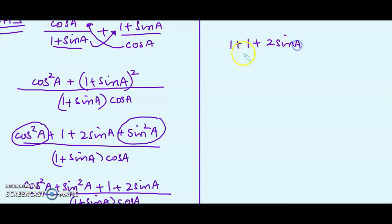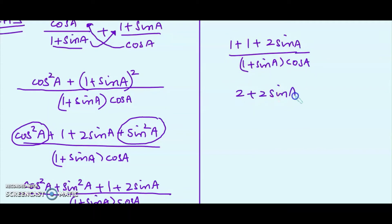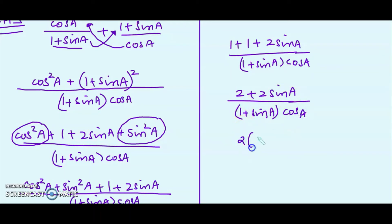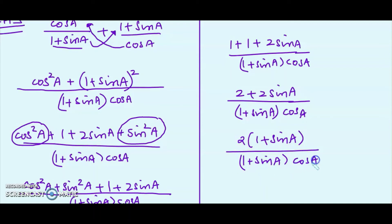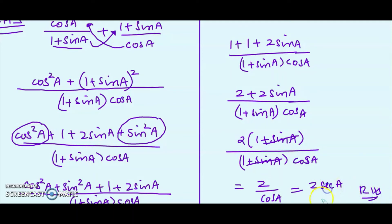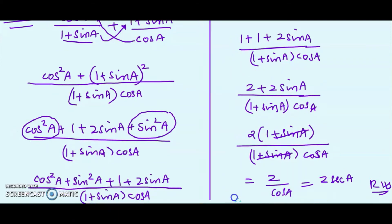The numerator becomes 1 + 1 + 2 sin A = 2 + 2 sin A, over (1 + sin A) · cos A. Factoring out 2 from the numerator gives 2(1 + sin A) / [(1 + sin A) · cos A]. The (1 + sin A) terms cancel, leaving 2/cos A, which equals 2 sec A — our RHS. Proved.